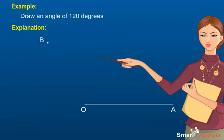Step 4: Join OB. Thus, angle AOB is 120 degrees.